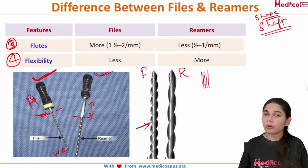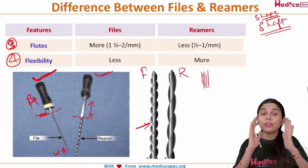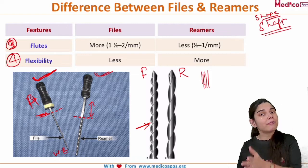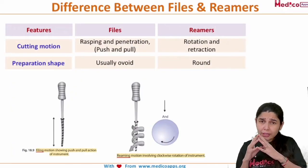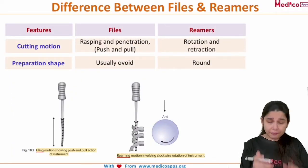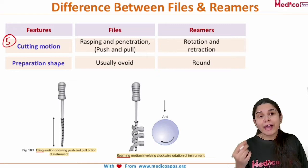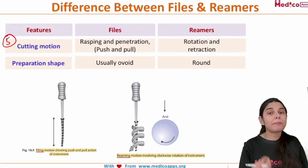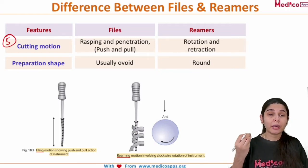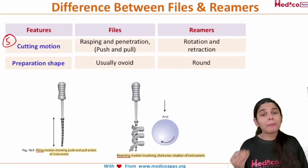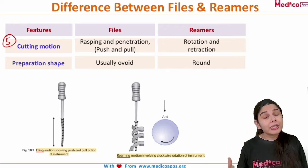So those are the third and fourth differences. The first two were cross section and area of cross section. The fifth difference is about the cutting motion — how a file cleans and shapes the root canal compared to reamers. The cutting motion of the file is called rasping and penetration, which is the filing motion — a push and pull motion.